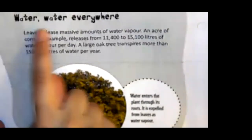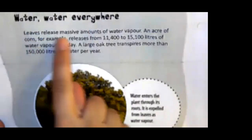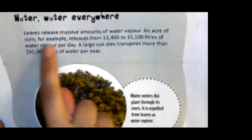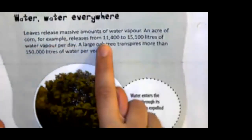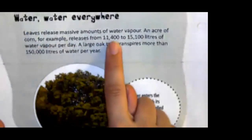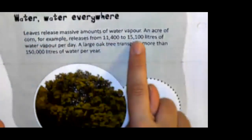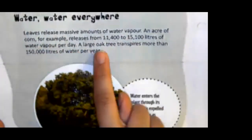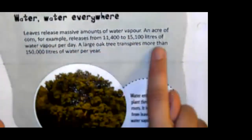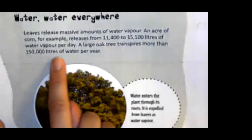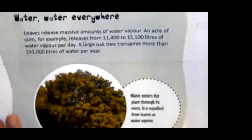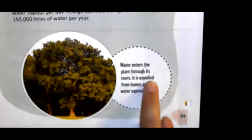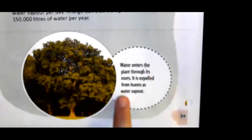Leaves release massive amounts of water vapor. An acre of corn, for example, releases from 11,400 to 15,100 liters of water vapor per day. A large oak tree transpires more than 150,000 liters of water per year. Water enters the plant through its roots and is expelled from leaves as water vapor.